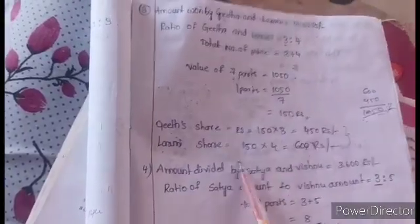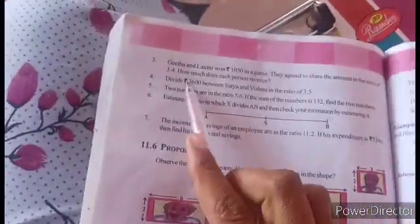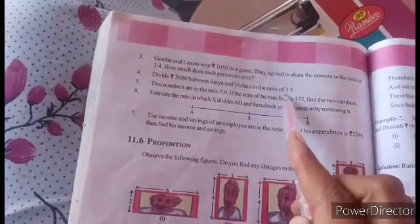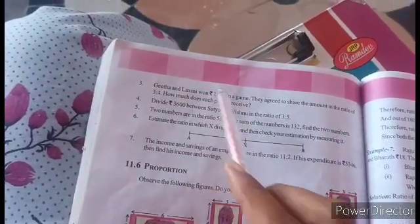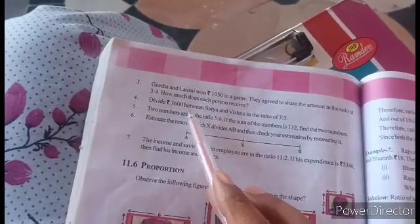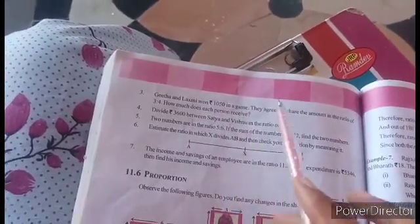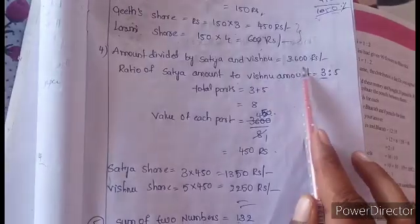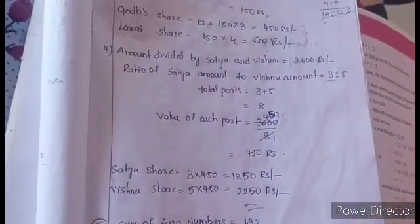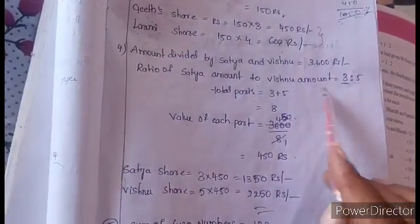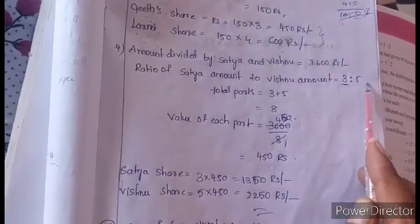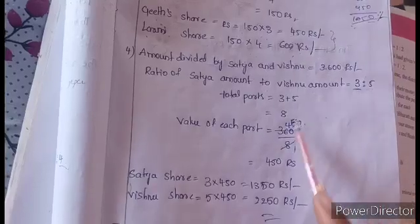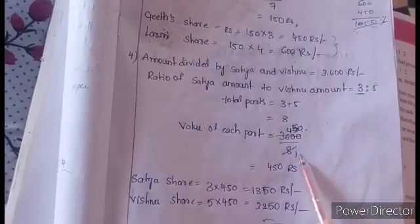So Gita's share is 450 rupees and Lakshmi's share is 600 rupees. Next question: divide 3,600 rupees between Satyayani and Vishnu in the ratio 3 to 5. Same as the above problem. Here 3,600 rupees is divided between Satyayani and Vishnu. The ratio is 3 to 5. Total parts: 3 plus 5 equals 8. So 3,600 divided by 8.